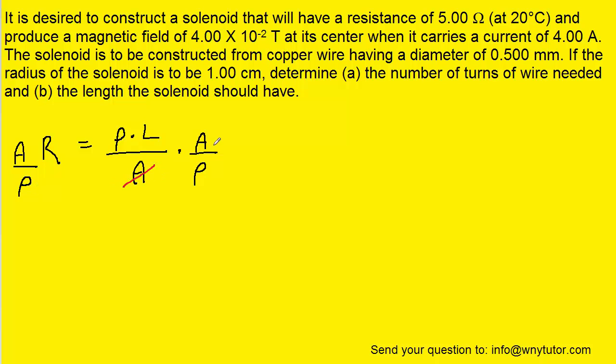And of course the areas will cancel as will that constant. Now for the area A we're going to use the area of a circle because in general a wire is assumed to be a cylinder shape. And of course the cross-sectional area of a cylinder is a circle. So we know that the area of that circle is pi R squared. So we'll fill that in for the area A.